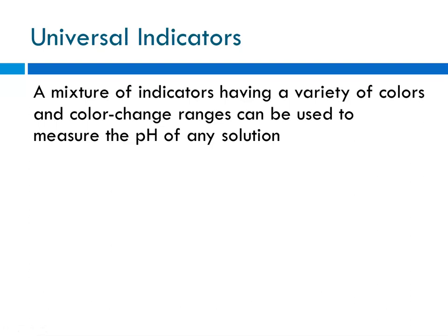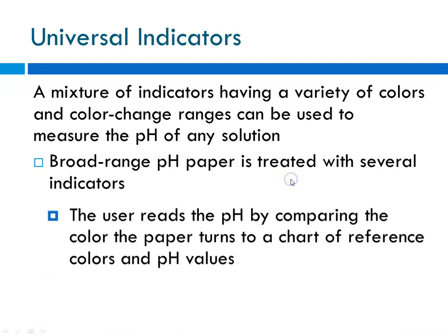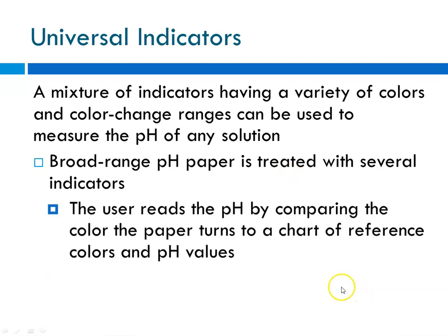The universal indicator we use is sensitive from a pH of 2 through 12. Broad-range pH paper is also available — pH paper has a coating of, for instance, the universal indicator. You would dip it in and determine the pH by comparing the color of the paper to a reference chart. This is what you do typically for your swimming pool or your hot tub.